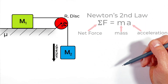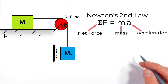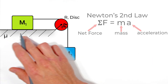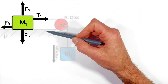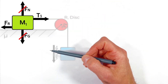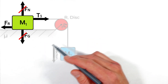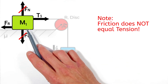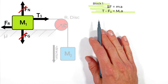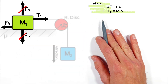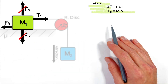To solve for the acceleration of this system, we're going to apply Newton's second law to each of the three objects individually. Newton's second law says the sum of all forces on any object equals that object's mass times acceleration. Looking at the free body diagram of the block on the surface, gravity and the normal force cancel vertically. Horizontally, tension pulls the block forward and friction acts backward, so: T minus friction equals M1 times A.